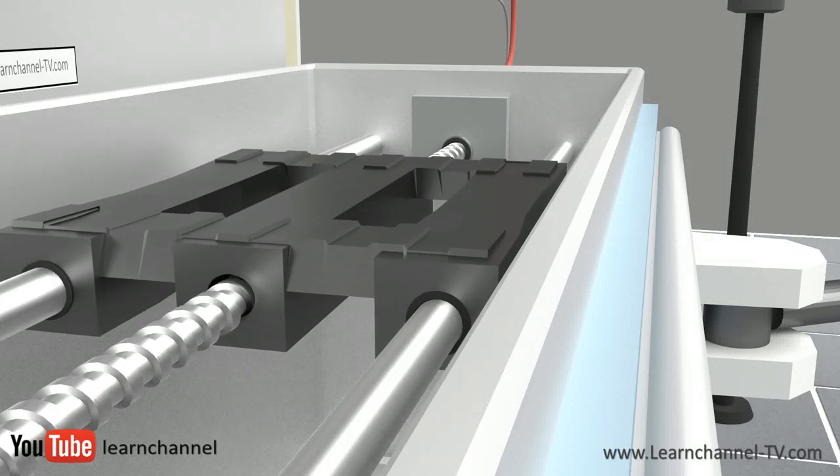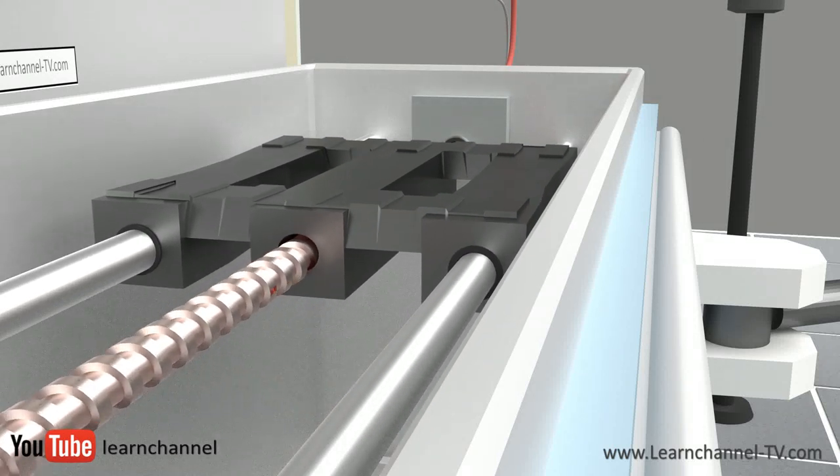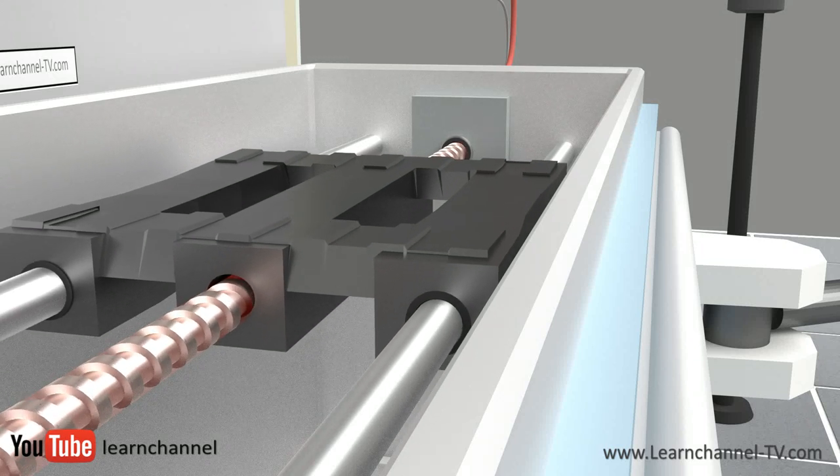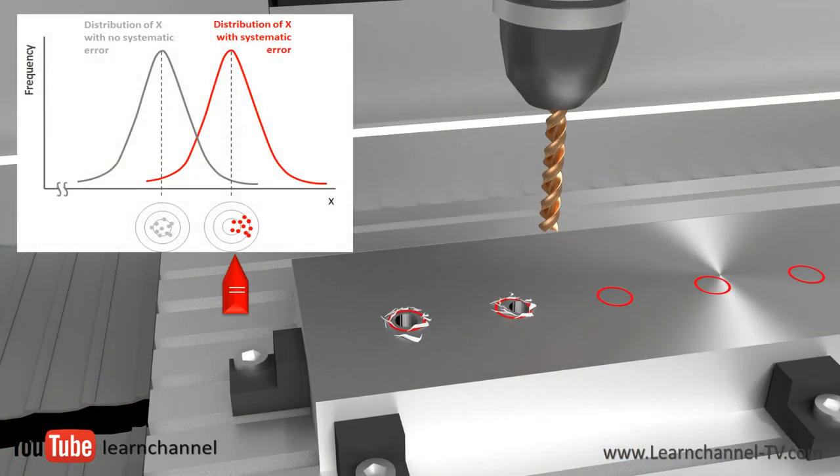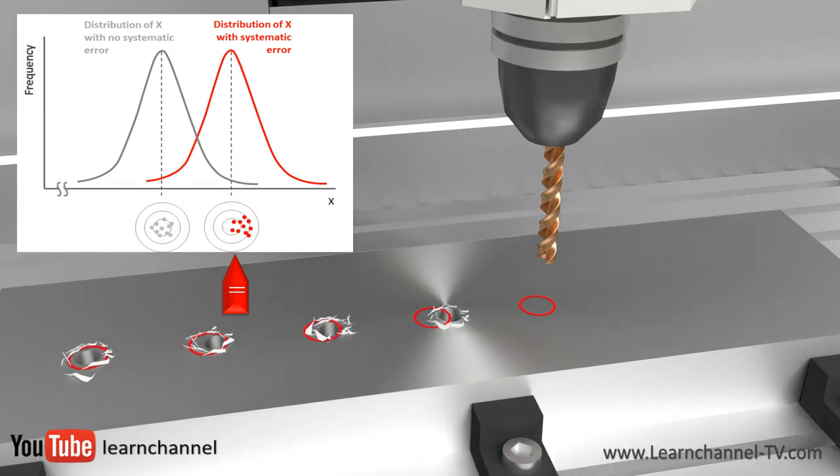Let's observe the milling machine working. The spindle heats up due to friction and expands. This linear expansion inevitably affects the workpiece. Here you can see how this systematic error affects the drillings of a workpiece.